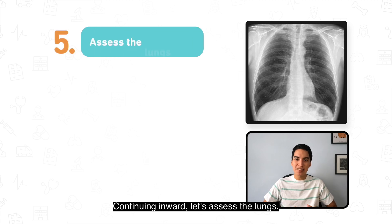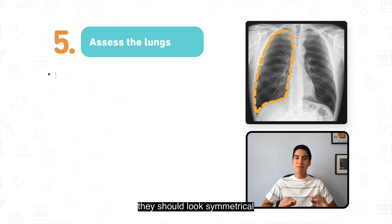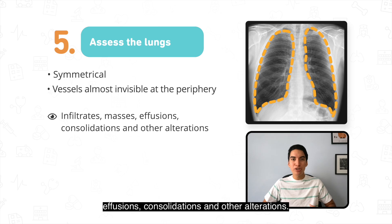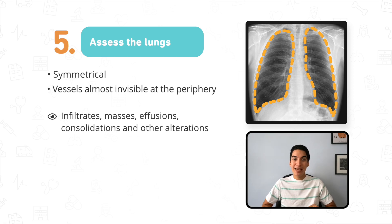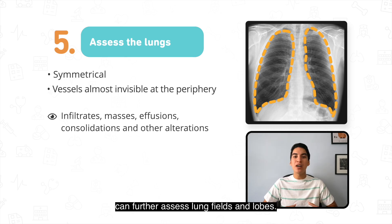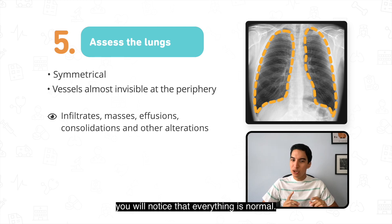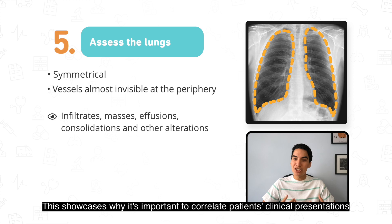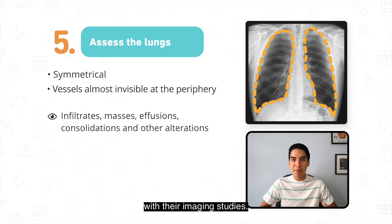Continuing inward, let's assess the lungs. They should look symmetrical and vessels should be almost invisible at the periphery. We should check for infiltrates, masses, effusion, consolidations, and other alterations. It's important to mention that a lateral chest x-ray can further assess lung fields and lobes. If you look closely at our patient's lung fields, you will notice that everything is normal, which makes sense given that he only had mild pneumonia and recovered quickly. This showcases why it's important to correlate the patient's clinical presentation with their imaging studies.